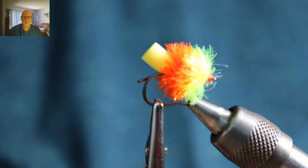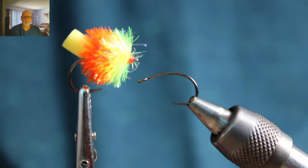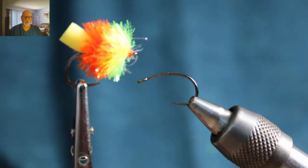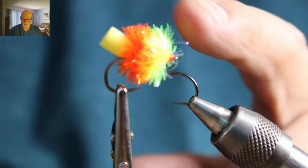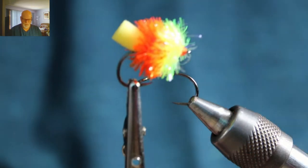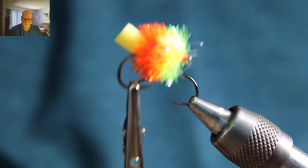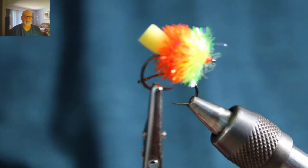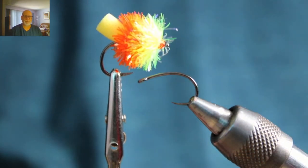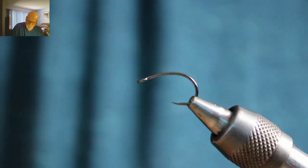I'm not going to tie that exact color combination. The one I'm going to tie today is going to be an orange and then a lighter orange, almost a yellow on the front. That's what I'm going to be tying for you today.